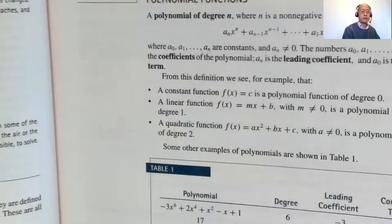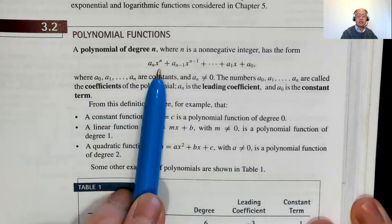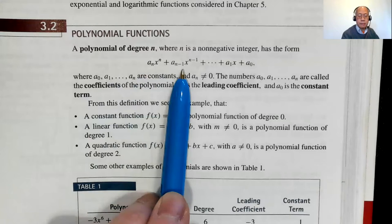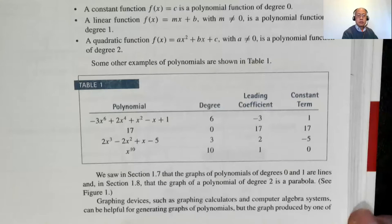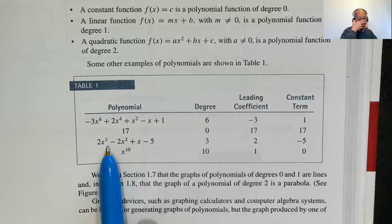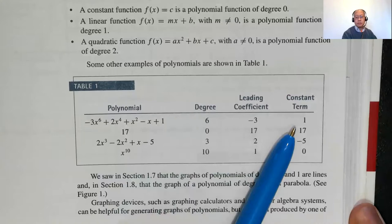A reminder from algebra: a polynomial of degree n has n as the highest exponent. We have coefficients a-sub-n times x to the n, a-sub-(n-1) times x to the (n-1), and so on. A-sub-n is called the leading coefficient, and a-sub-zero is the constant. For example: sixth degree, zero degree, third degree, tenth degree — with leading coefficients like negative three, seventeen, two, or one — and constant terms like one, seventeen, negative five, and zero.